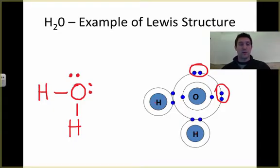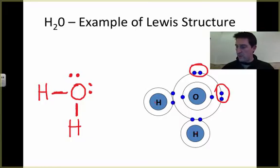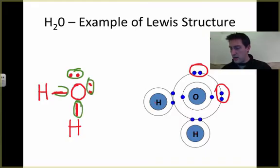This is the Lewis structure for water. This hydrogen has two valence electrons — that's what the bond line shows — and so does this hydrogen. If we look at all the valence electrons around oxygen, oxygen would like to have eight, and it's got two, four, six, eight. So everybody's happy.